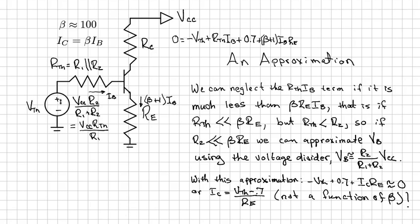Once you've done this, you write a loop equation around the base loop as shown for IB and hence IC. Here's the equation right here. So the sum of the voltages around the loop is zero.